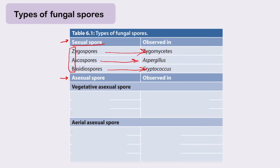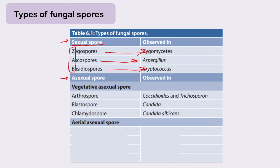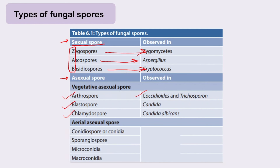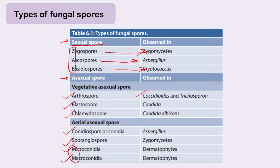Asexual spores are of two types: vegetative and aerial. Vegetative asexual spores include: arthrospores seen in Coccidioides and Trichosporon; blastospores seen in Candida; and chlamydospores seen in Candida albicans. Aerial spores include conidiospores (conidia) seen in Aspergillus, sporangiospores seen in Zygomycetes, and microconidia and macroconidia seen in dermatophytes — a very important characteristic feature of dermatophytes.